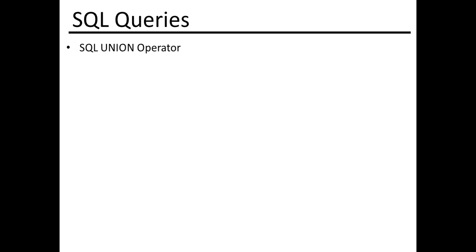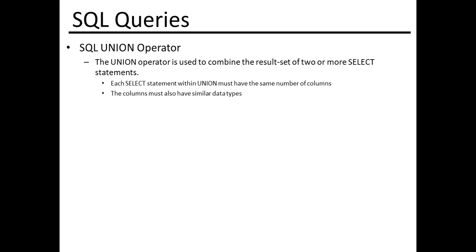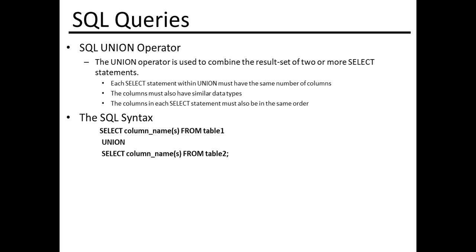Hello, in this course we will talk about the use of the UNION operator in SQL. The UNION operator is used to combine the result set of two or more SELECT statements. Each SELECT statement within UNION must have the same number of columns, the columns must have similar data types, and the columns in each SELECT statement must also be in the same order. The syntax is: SELECT columns FROM table1 UNION SELECT columns FROM table2.